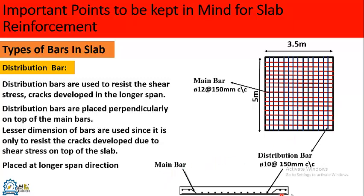Here is the cross section of the slab. The bent bar or straight bar you see in this cross section is the main bar, and the bars in the form of dots are the distribution bars, which are placed perpendicularly above the main bars.